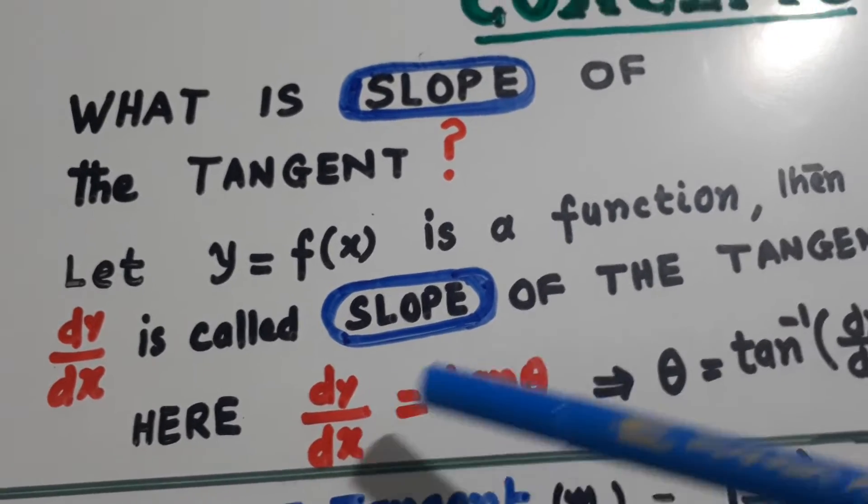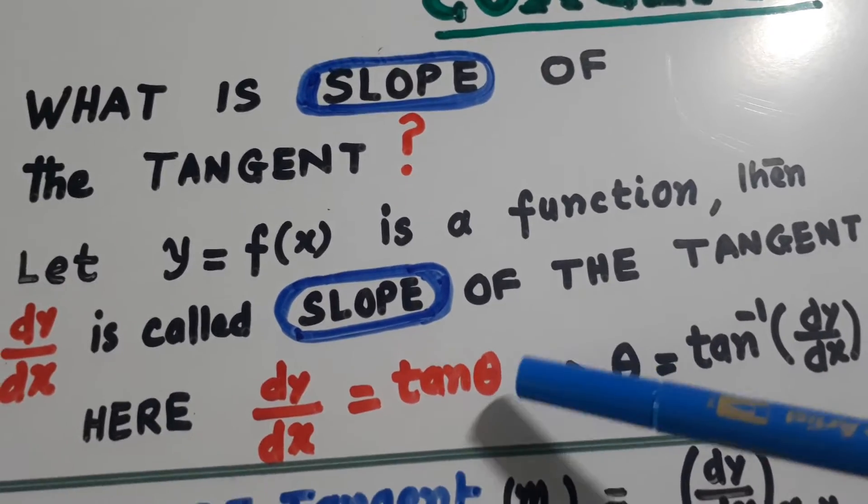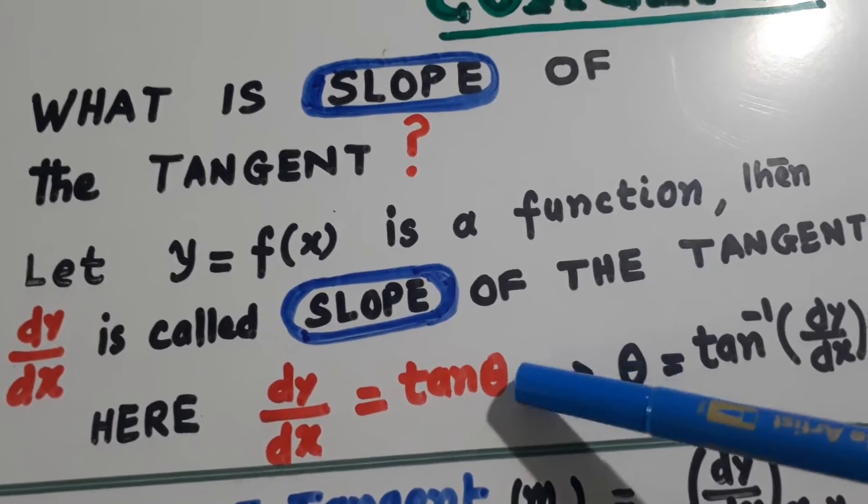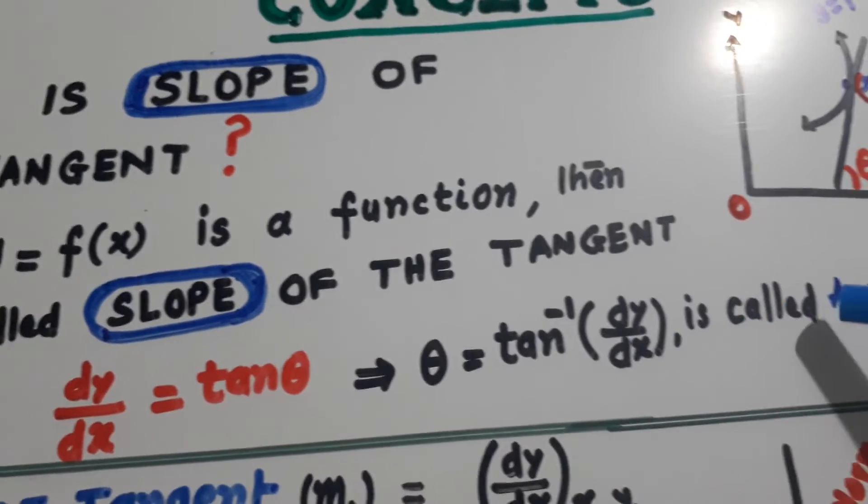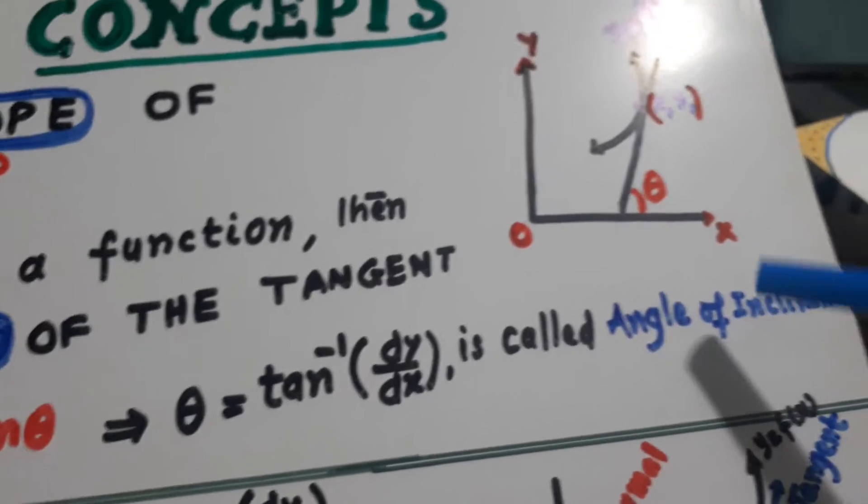So dy by dx is tan theta because slope is always tan theta and theta will be equal to tan inverse dy by dx. This is called the angle of inclination.